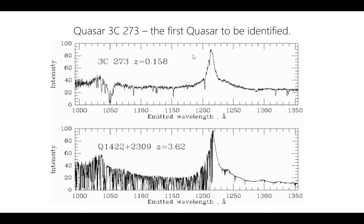Gunn and Peterson in 1965 published a paper using a quasar like this to obtain the first ever measurement of the density of intergalactic material — a groundbreaking moment. One key finding was that the density of neutral hydrogen in intergalactic space is incredibly low; if it weren't, it would absorb pretty much all the light. They found the cosmic web is almost entirely ionized. Today, absorption studies remain extremely important — we have hundreds of thousands of quasars in databases like the SDSS quasar catalog, each giving a different line of sight through the cosmic web to build a 3D picture.